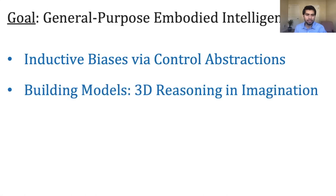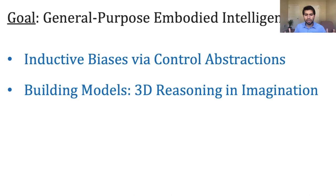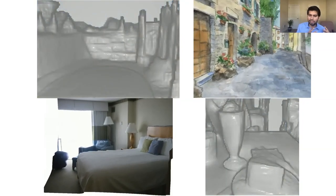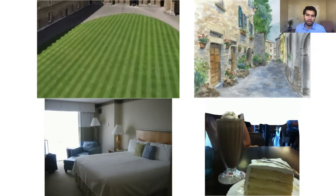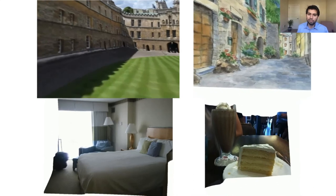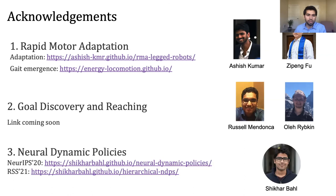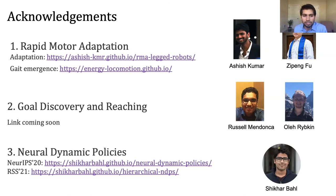We also need 3D reasoning in imagination — reasoning in 3D space, not just 2D. We take a single image as input and convert it into 3D reasoning without any 3D supervision. I believe all these ideas have to come together to make this long-term goal efficient and practical. Thanks to students Ashish and Zipeng for the RMA line of work, Russel and Oleg for goal discovery, and Shikhar on control plus learning.